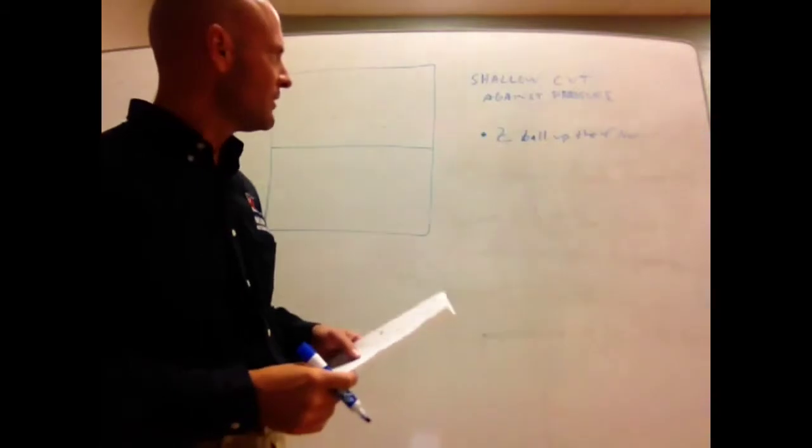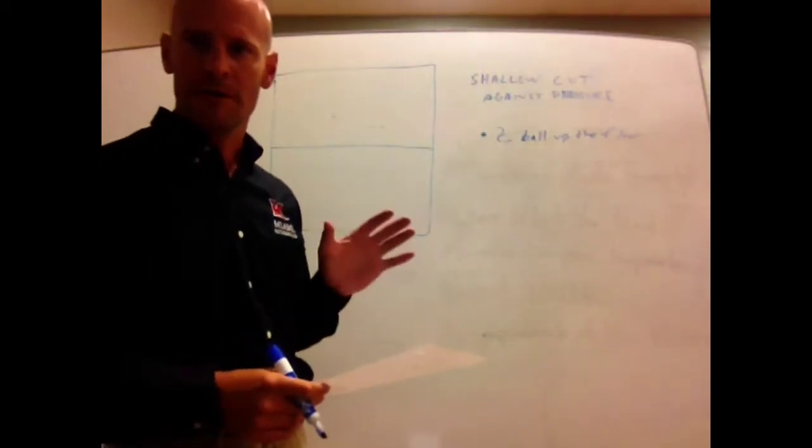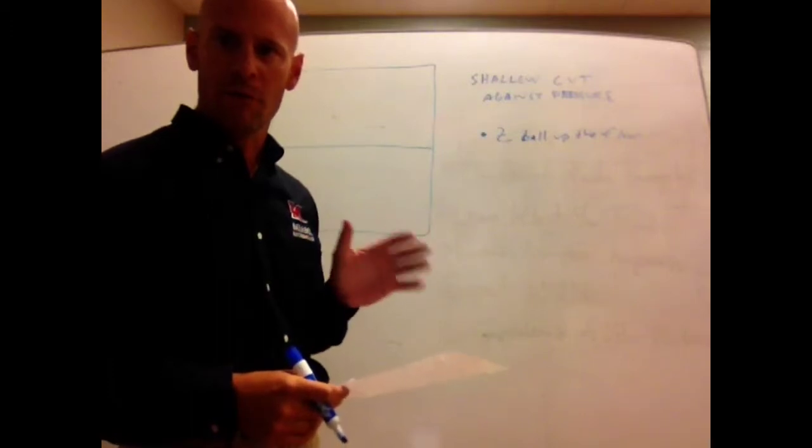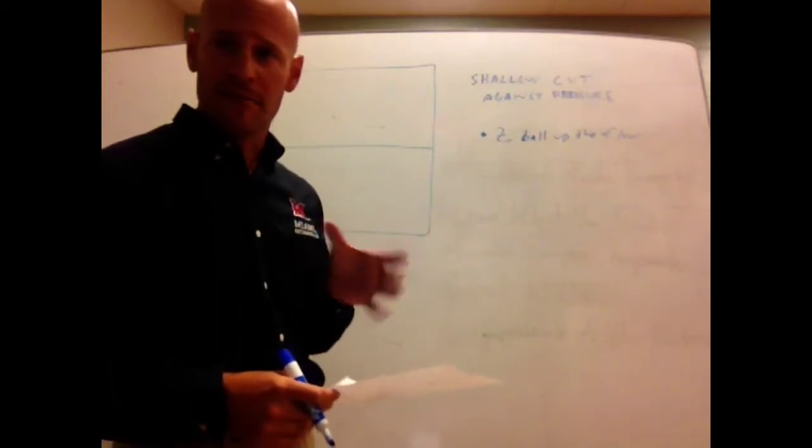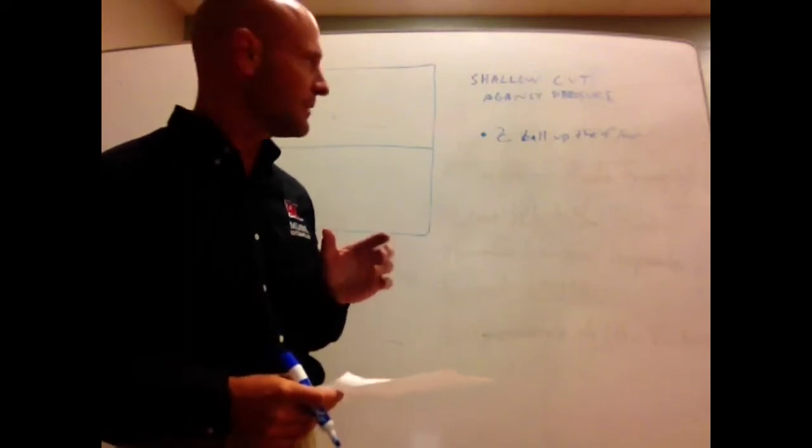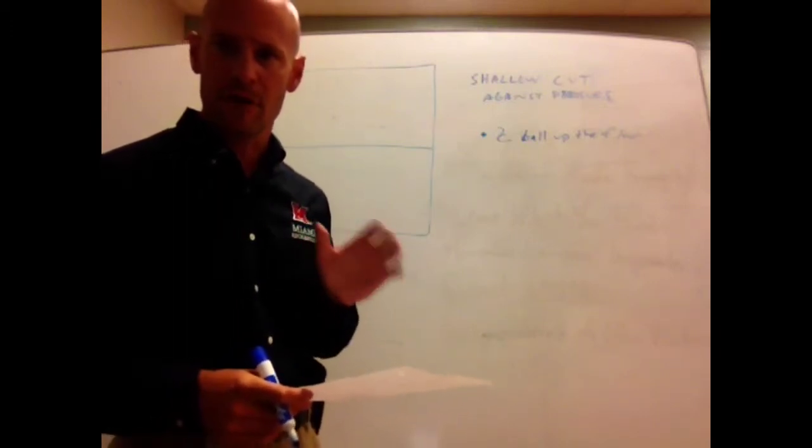In this video presentation today I want to talk about using the shallow cut to relieve run and jump man-to-man full court defensive pressure. I think it's a technique that can also be used against zone pressure in the backcourt, but it's really effective against man-to-man pressure.